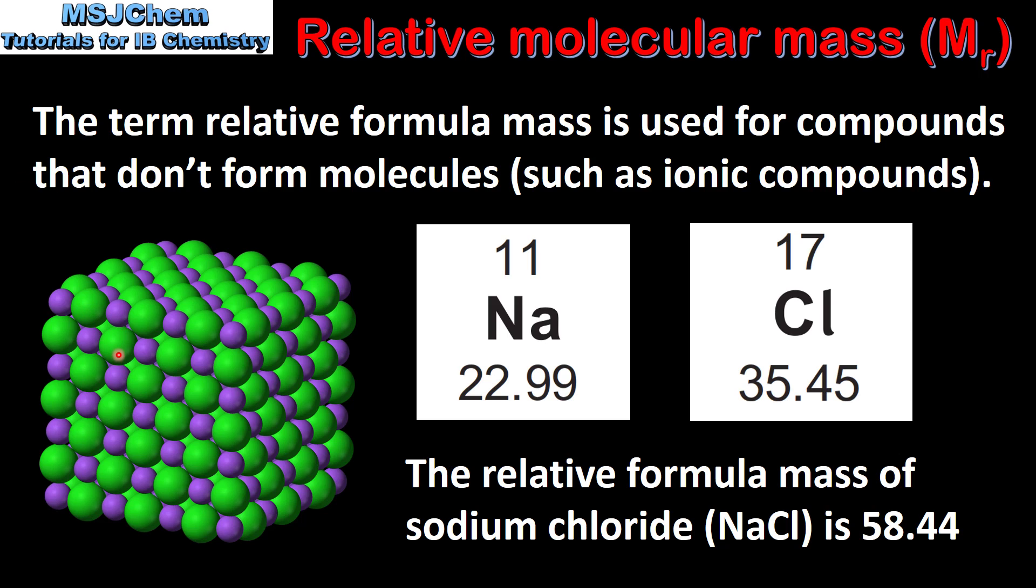Here we can see the lattice structure of sodium chloride, which is an ionic compound. It is composed of positive sodium ions and negative chloride ions. To find the relative formula mass, we add the relative atomic masses of sodium and chlorine. This gives us a relative formula mass of 58.44.